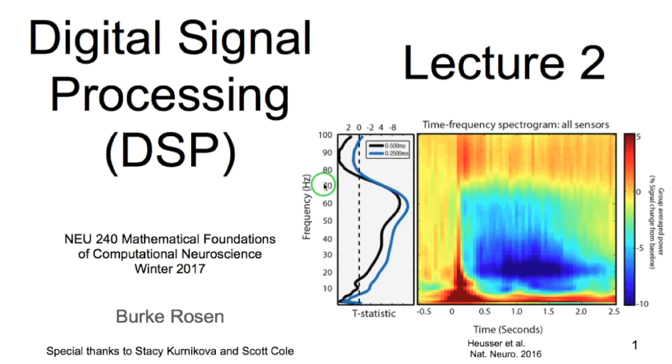Hello, my name is Burke Rosen and this is the second lecture of the module on digital signal processing for the course Mathematical Foundations of Computational Neuroscience.